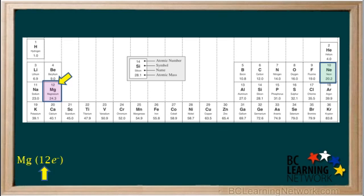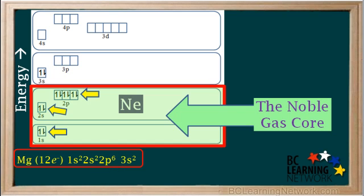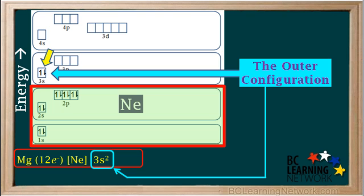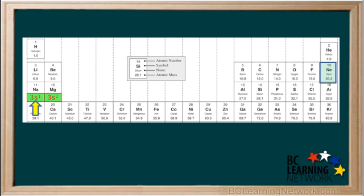Now we'll look at the element that comes after sodium — magnesium, with 12 electrons. Using the energy level diagram, we see how the 12 electrons fill the orbitals, giving rise to its configuration of 1s2, 2s2, 2p6, 3s2. Again, we put a box around its noble gas core — neon, which is 1s2, 2s2, 2p6 — and replace this with [Ne] in square brackets. The outer configuration of magnesium is 3s2, giving us [Ne] 3s2 as our core notation. We show that in magnesium's box on the periodic table. Sodium's outer configuration was 3s1, and magnesium's is 3s2.